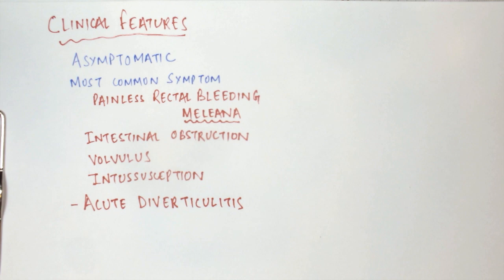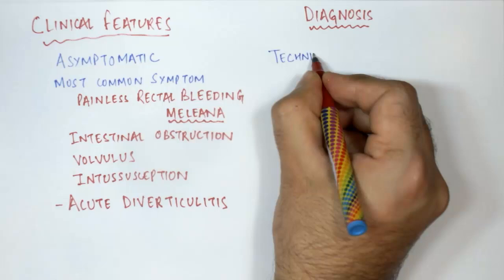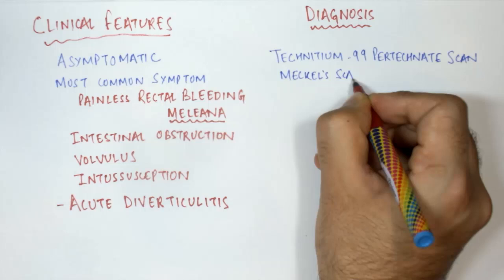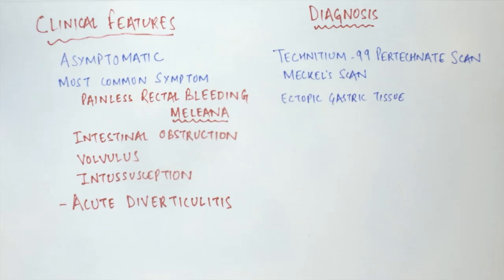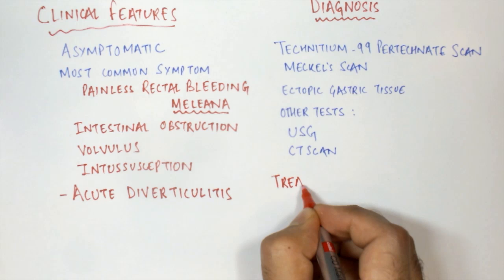How is Meckel's Diverticulum diagnosed? The most important test we can do to diagnose Meckel's Diverticulum is Technetium-99 pertechnetate scan. This test is also known as the Meckel's scan, and it detects ectopic gastric tissue. Other tests we can do to diagnose Meckel's Diverticulum are ultrasonography and CT scan.